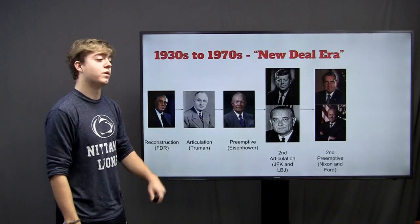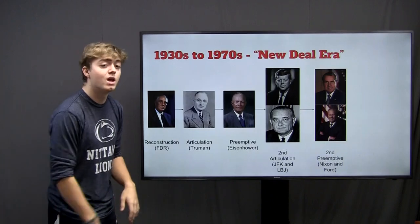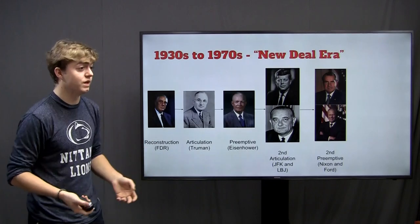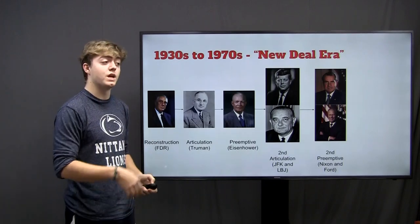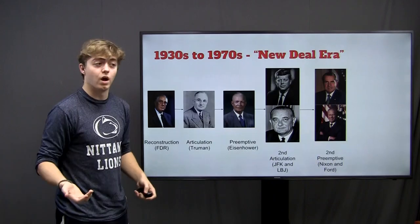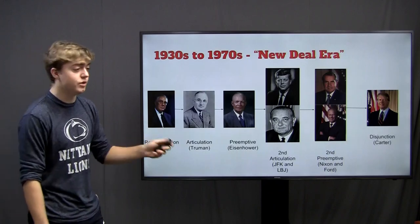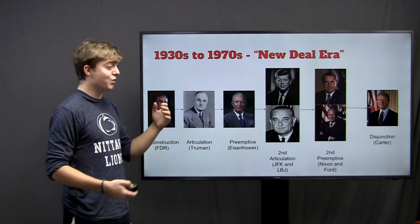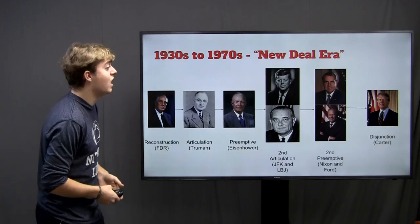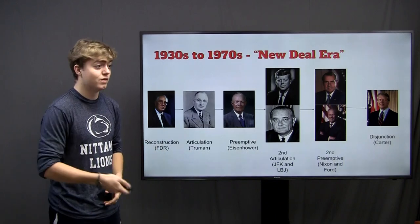Then we have Nixon and Ford — Nixon resigned after the Watergate incident, so those two are tied together. While passing conservative policies like the drug war and supporting Vietnam, they also had to do things like create the EPA, the Environmental Protection Agency, and increase the welfare state. And finally, we end with Jimmy Carter, who not only struggled with the economy but also faced the Iran hostage crisis in foreign policy, and eventually started the next political era — the Reagan era.